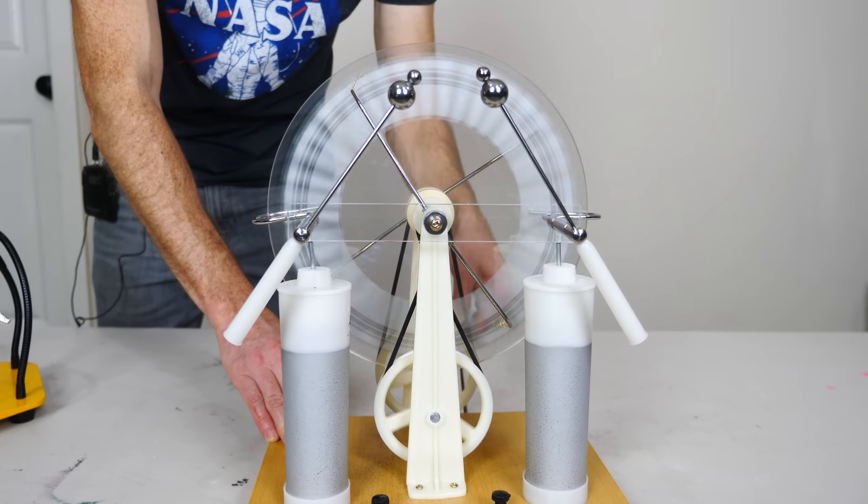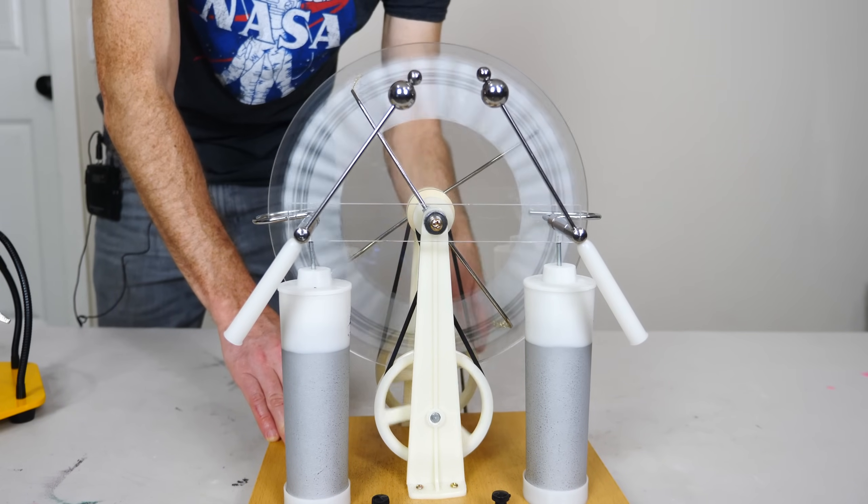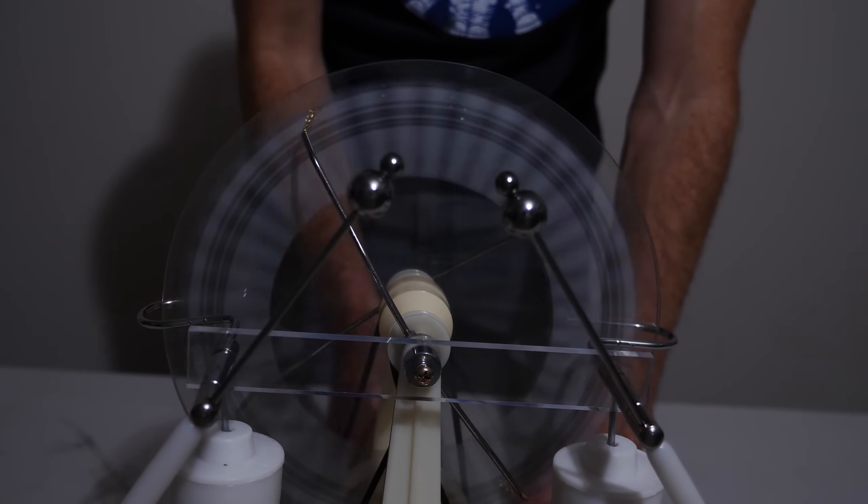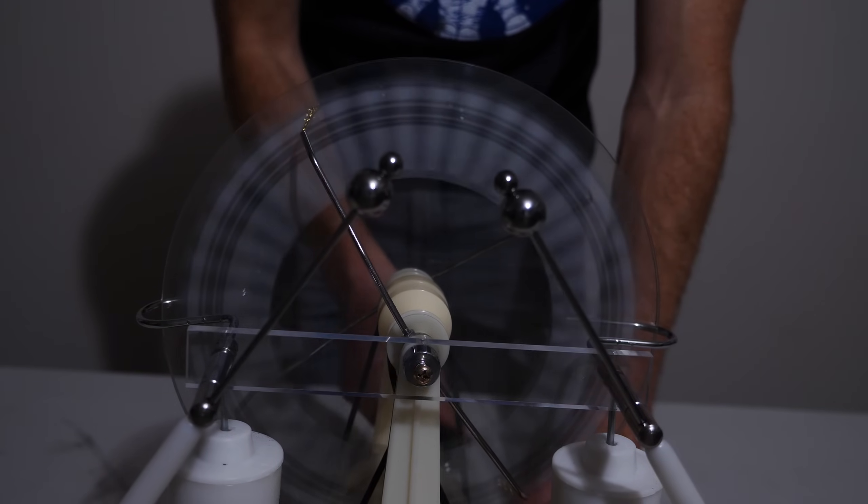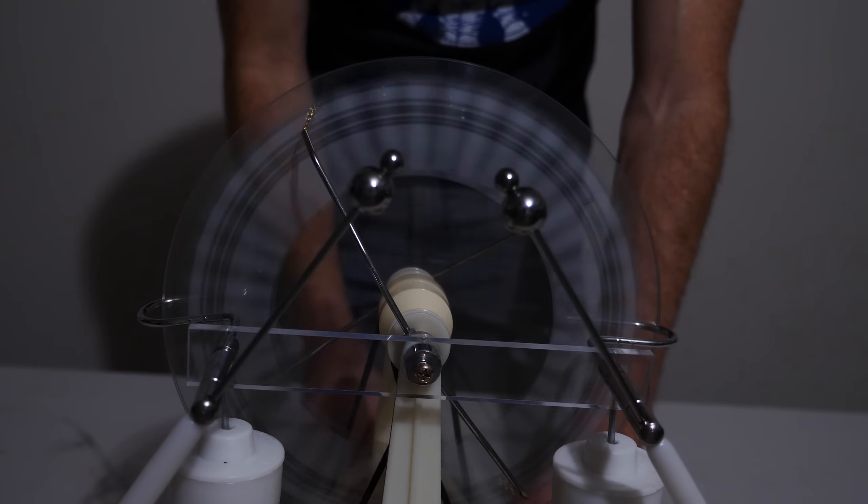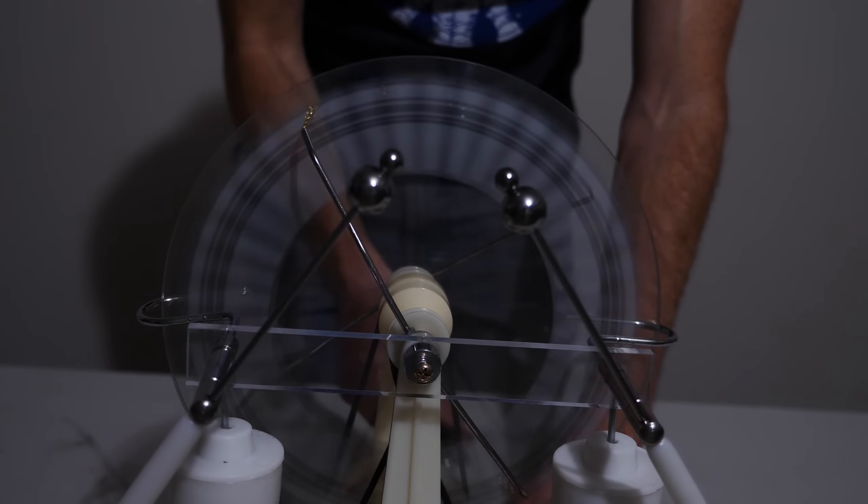And then you get sparks that form. And these are actually giant sparks. So it takes around 10,000 volts per centimeter of air to electrically break it down. So that means that these are around 5 centimeters apart so this is at least 50,000 volts between the two ends here.